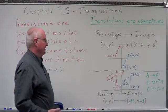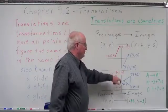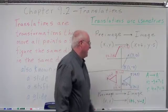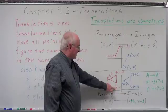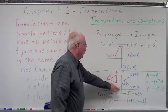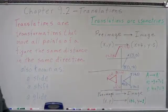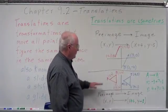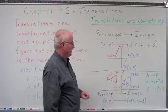Let's verify the rule with the other points. Adding 6 to −2 gives 4 — yes. Subtracting 1 from 6 gives 5 — correct. Adding 6 to −2 gives 4, and subtracting 1 from 2 gives 1 — yes. All three points follow the same pattern, so this is a translation — a congruent figure to a congruent figure.